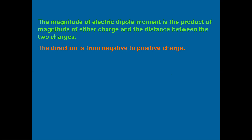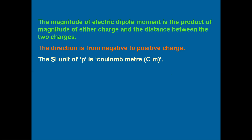From the mathematical formula we can write down the SI unit of P. Since P = 2qa, the SI unit of Q is Coulomb and the SI unit of distance is meter, so the SI unit of dipole moment will be Coulomb meter.